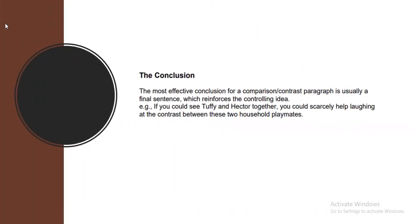The conclusion: the most effective conclusion for a comparison or contrast paragraph is usually a final sentence which reinforces the controlling idea. For example: 'If you could see Toffee and Hector together, you could scarcely help laughing at the contrast between these two household playmates.'